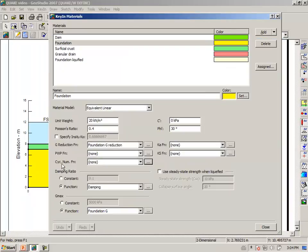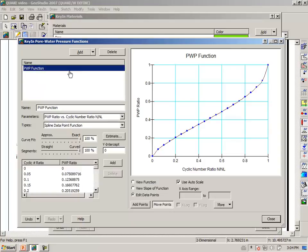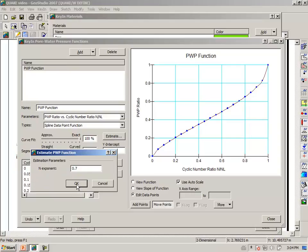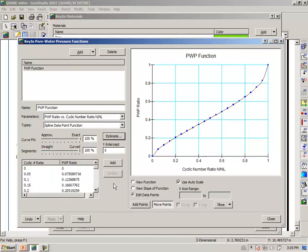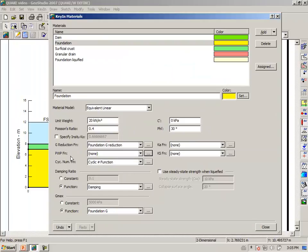Now, having defined the function, we need to now attach that function to the soil. And so we select our cyclic number function. And we need a pore water pressure function. A pore water pressure function, we usually accept the default function here. It is possible to alter this function a little bit. But usually there isn't sufficient data to alter it a great deal. And so we accept the default settings for the pore water pressure ratio function. Once again, we need to attach it to the soil. So we select from the list, pore water pressure function.